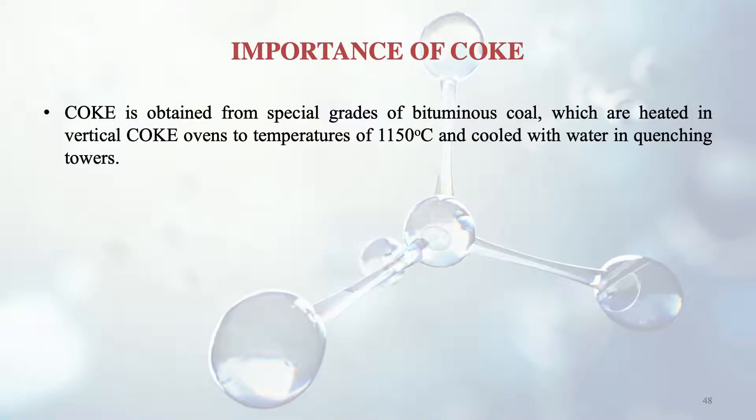Coke is obtained from special grades of bituminous coal, which are heated in vertical coke ovens to temperatures of 1150°C and cooled with water in quenching towers. Among the various types of coal — anthracite, lignite and others — it is the bituminous coal that is used to obtain coke.